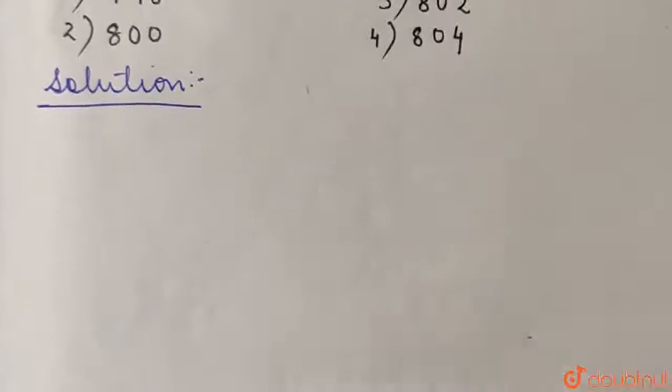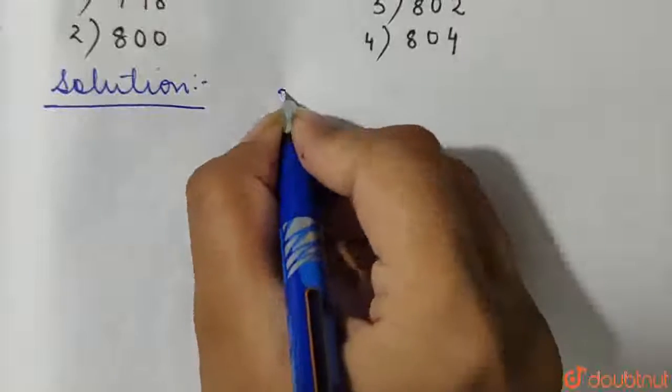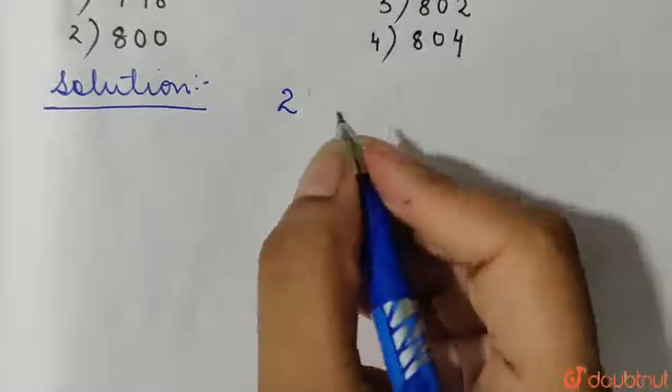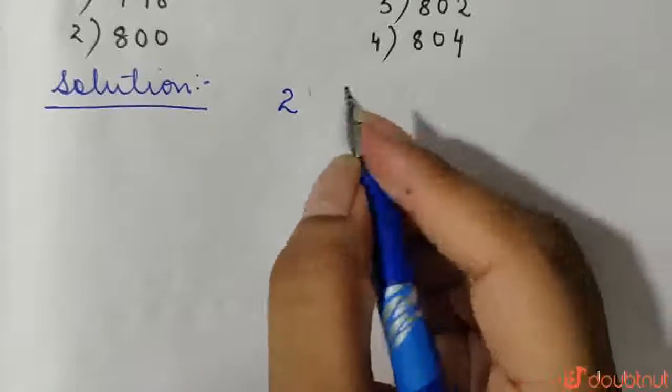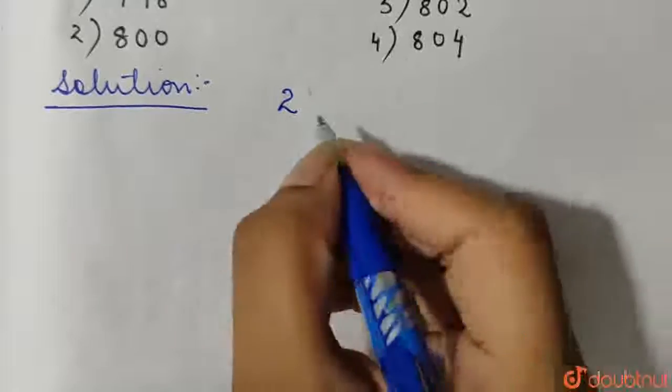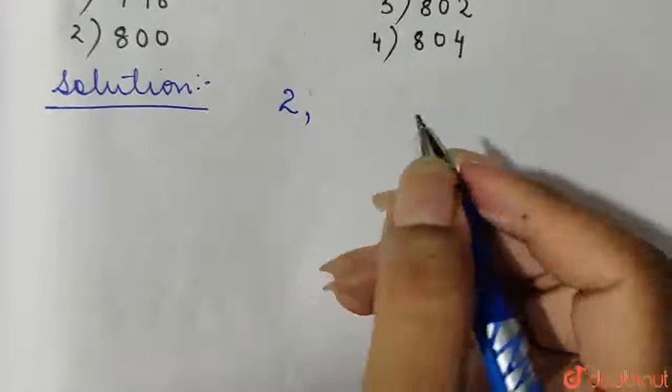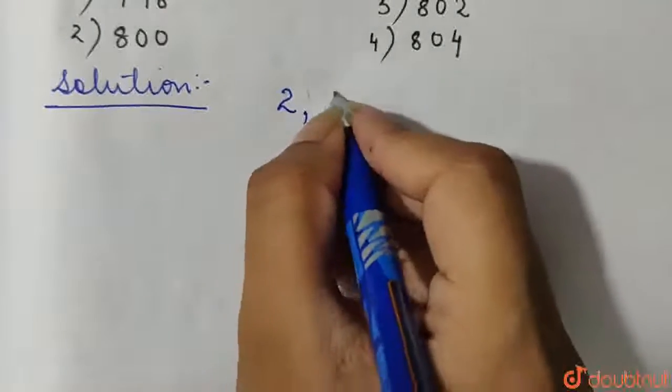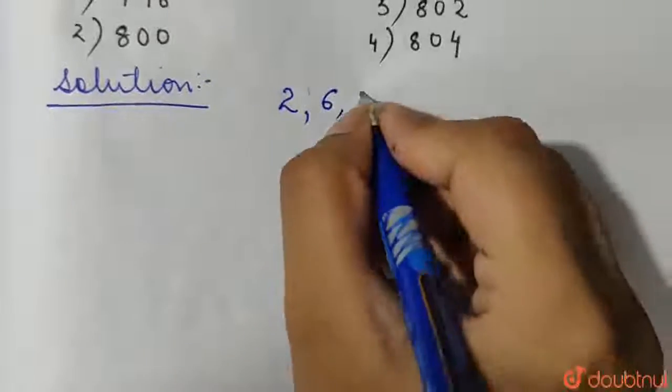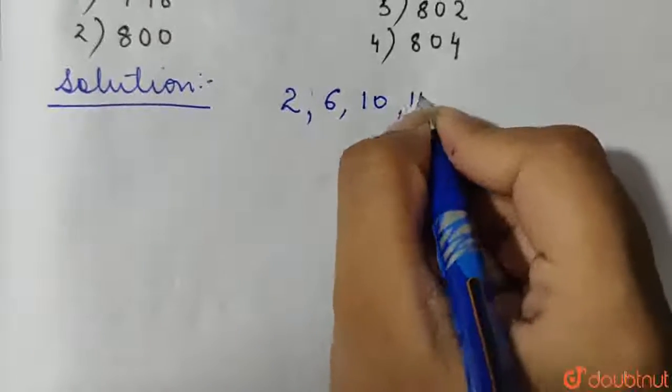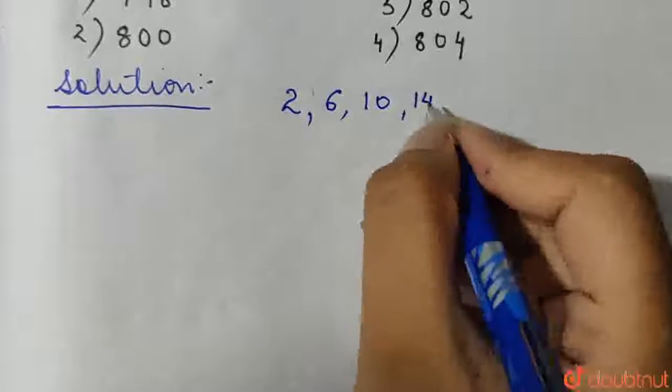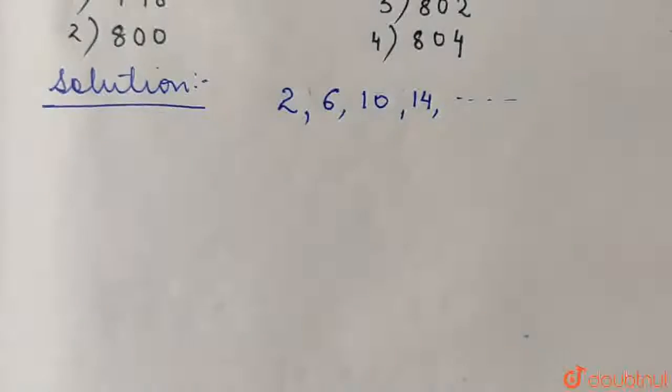So we have a sequence with first term 2 and every successive term is 4 more than the previous term. That means the next term in this sequence would be 2 plus 4 which is 6. The next term would be 10 and similarly adding 4 in each previous term we obtain a sequence.